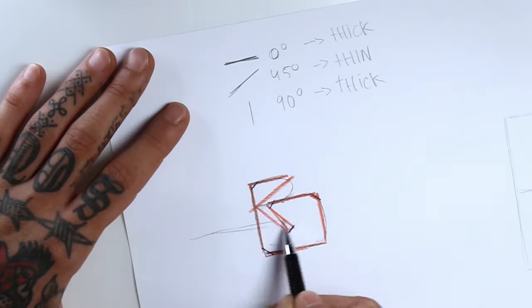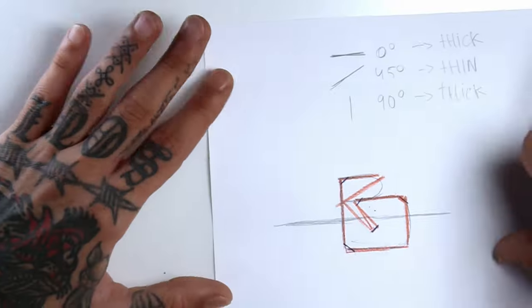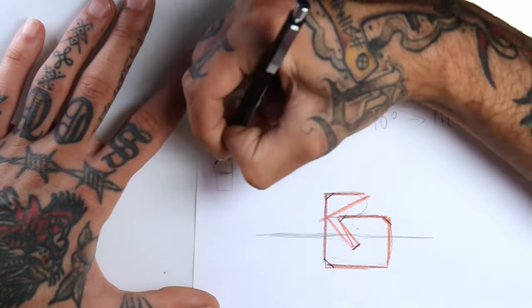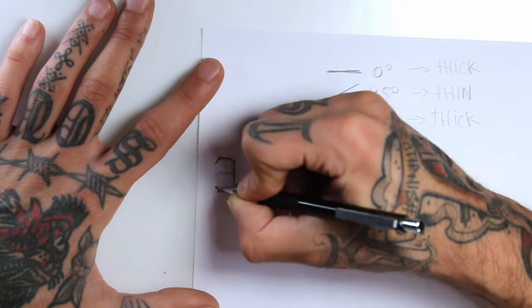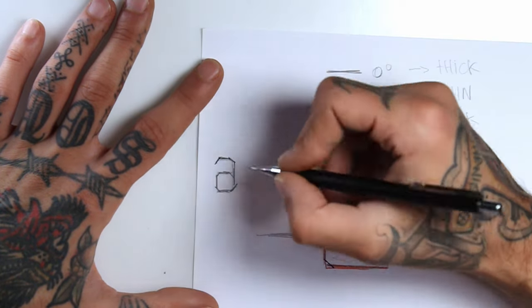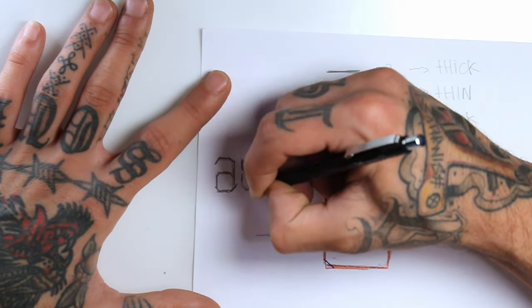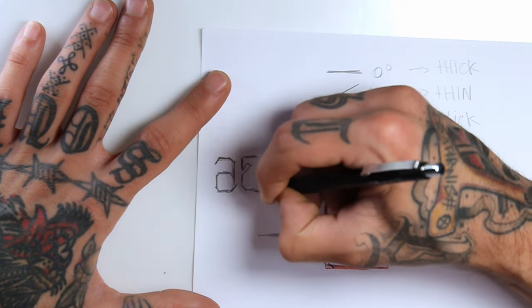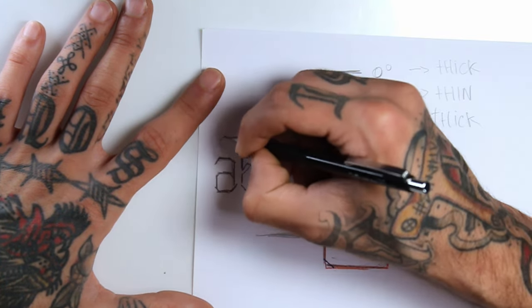I'll quickly show you here on the side that you can apply this to an A, which is basically getting the basic shape of any letter and focusing on turning that letter into zero, 45, and 90 degree angles. As you can see with this A and this E.